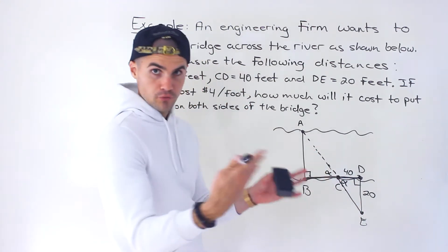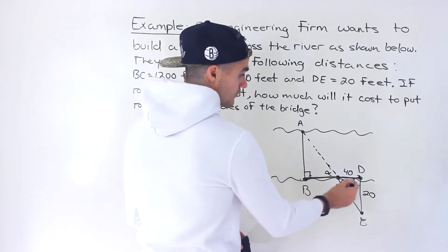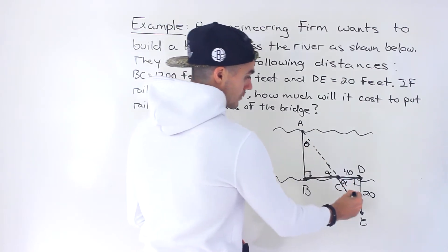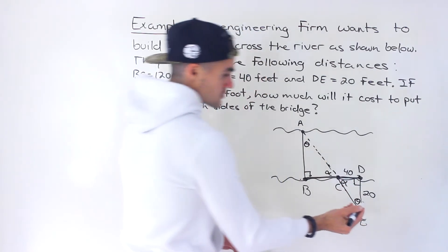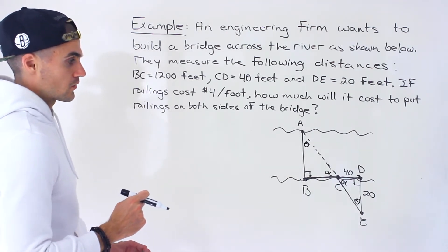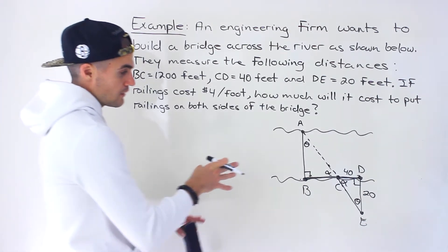Notice that this angle and this angle are the same. If both triangles have the same angle and they both have a 90 degree angle, that means this angle and this angle have to be the same as well because all the angles have to add up to 180 for each triangle. So both of those are similar triangles.